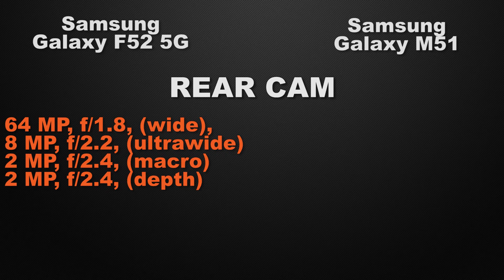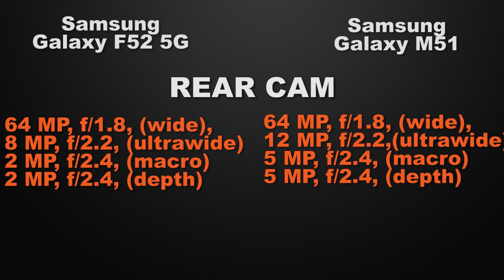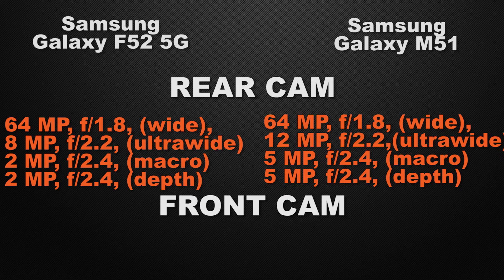Let the comparison start with the camera of the devices. Talking about the rear camera: the F52 has a quad camera setup — 64 megapixel wide, 8 megapixel ultra-wide, 2 megapixel macro, and 2 megapixel depth sensor. The M51 also has a quad camera setup — 64 megapixel wide, 12 megapixel ultra-wide, 5 megapixel macro, and 5 megapixel depth sensor. The winner here is M51 because it has better camera sensors.